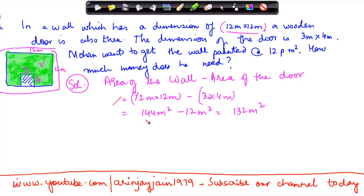For 1 meter square, I need to pay 12. So therefore, for 132 meter square, what I need to pay is 132 into 12. If I do this multiplication, this will give me 1584. So the total cost of painting this wall will be 1584.